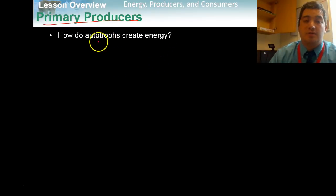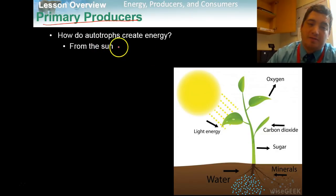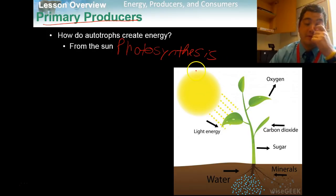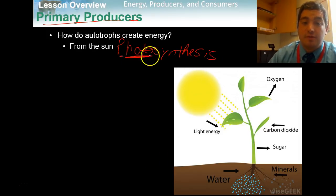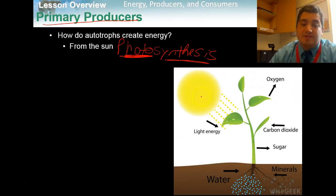So how do autotrophs create energy? The first way is from the Sun, and this process is called photosynthesis. Plants and algae and some bacteria can do photosynthesis, where they take sun energy — photo — and they make, or synthesize, useful sugar energy from that Sun.